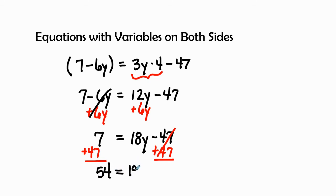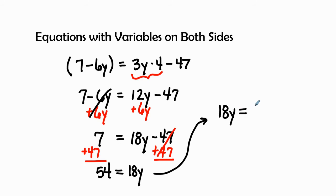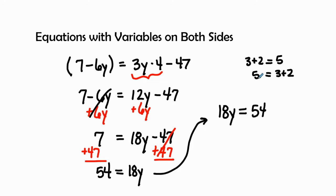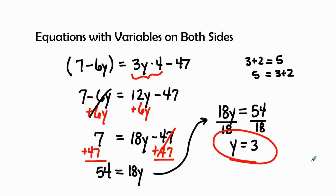I'm going to bring this problem over and switcheroo — switch it so I have my letters on the left and my numbers on the right. If I say 3 plus 2 equals 5, it's the same thing as saying 5 is equal to 3 plus 2. I'm just changing its position without combining any like terms — that's how we get it into standard form. So 18y divided by 18 gives us y equals 54 divided by 18, which is 3. Our final solution is y equals 3.